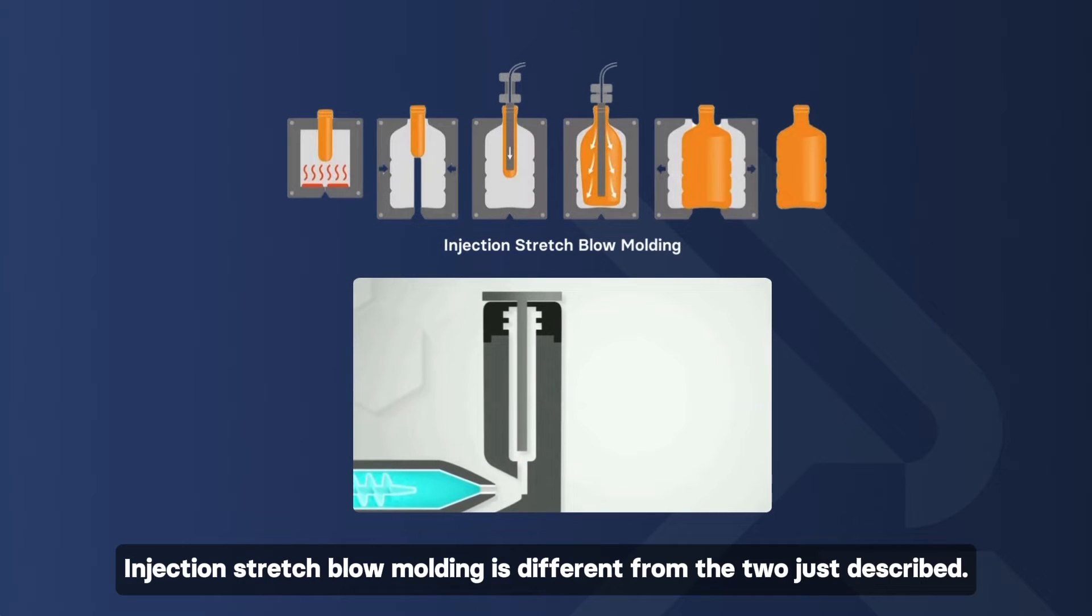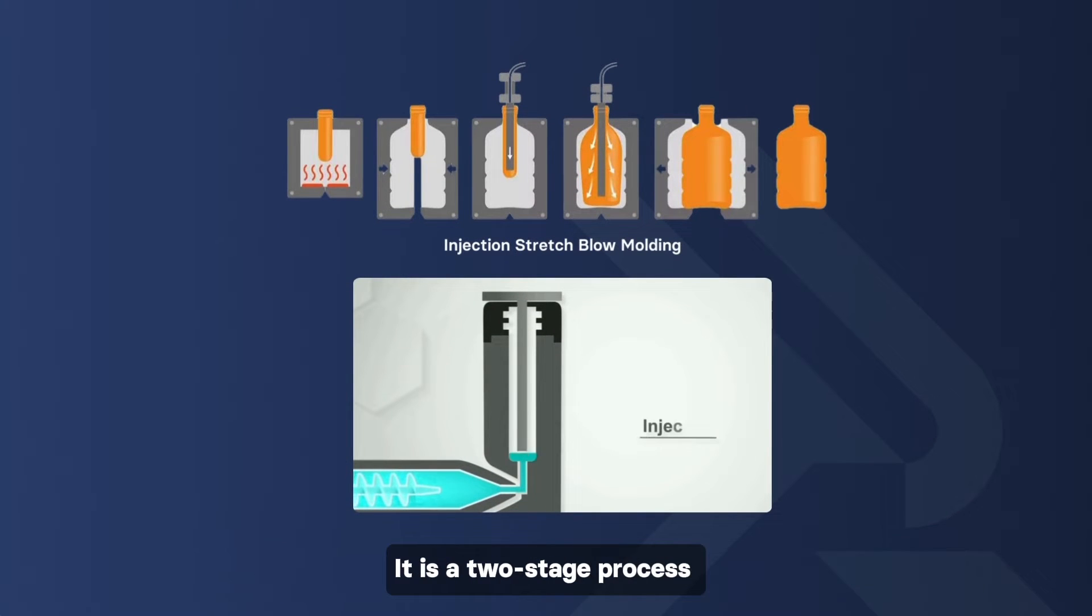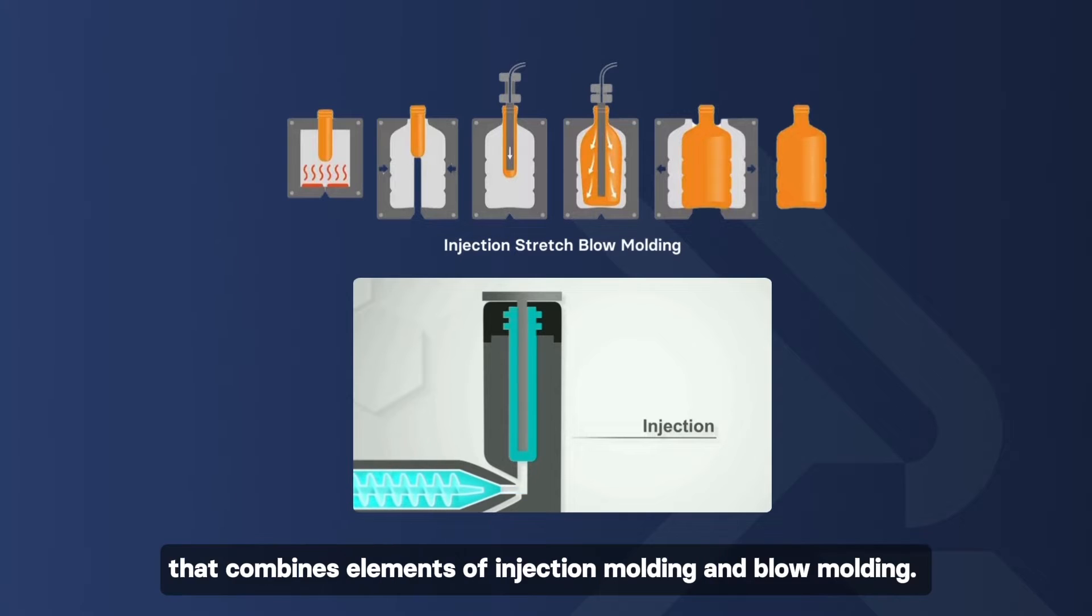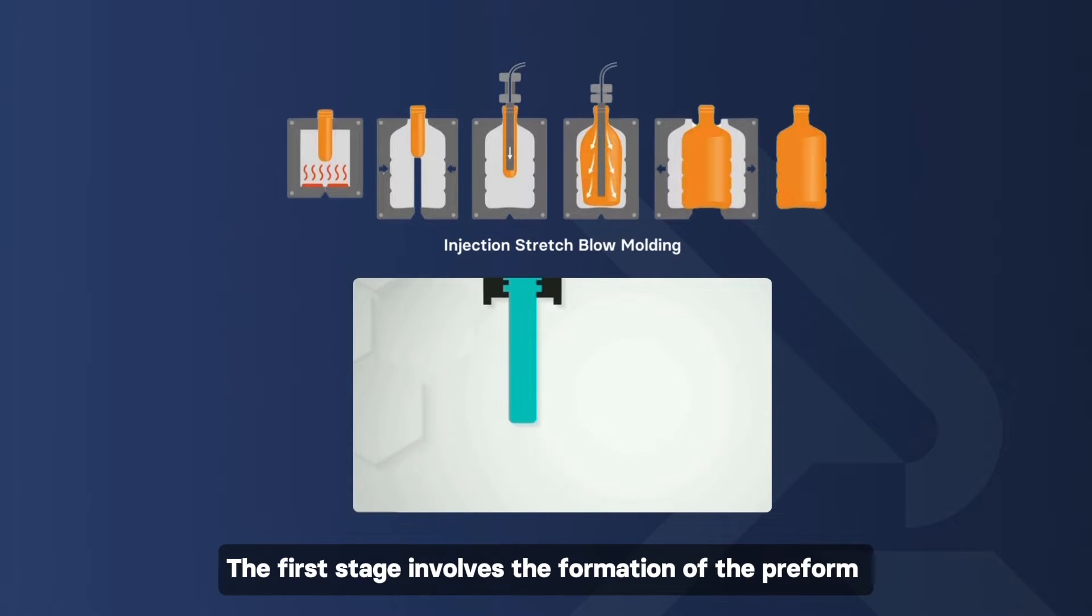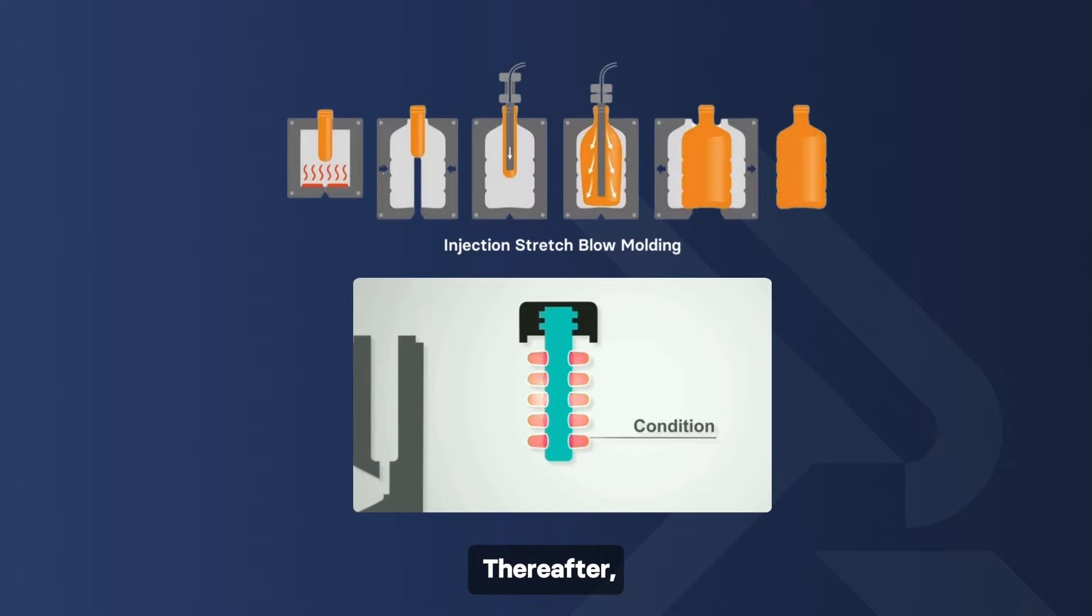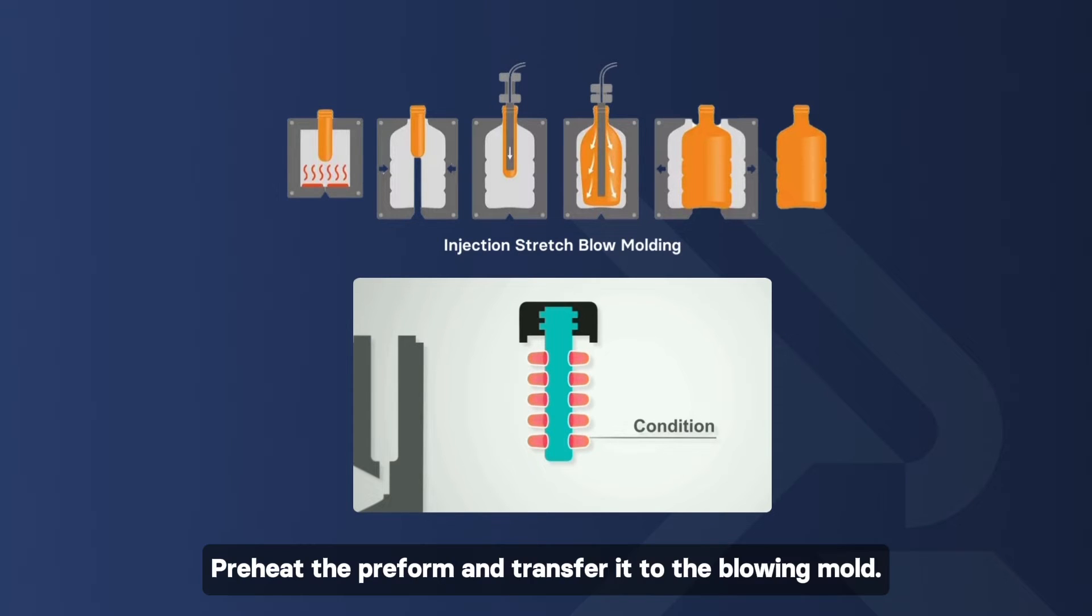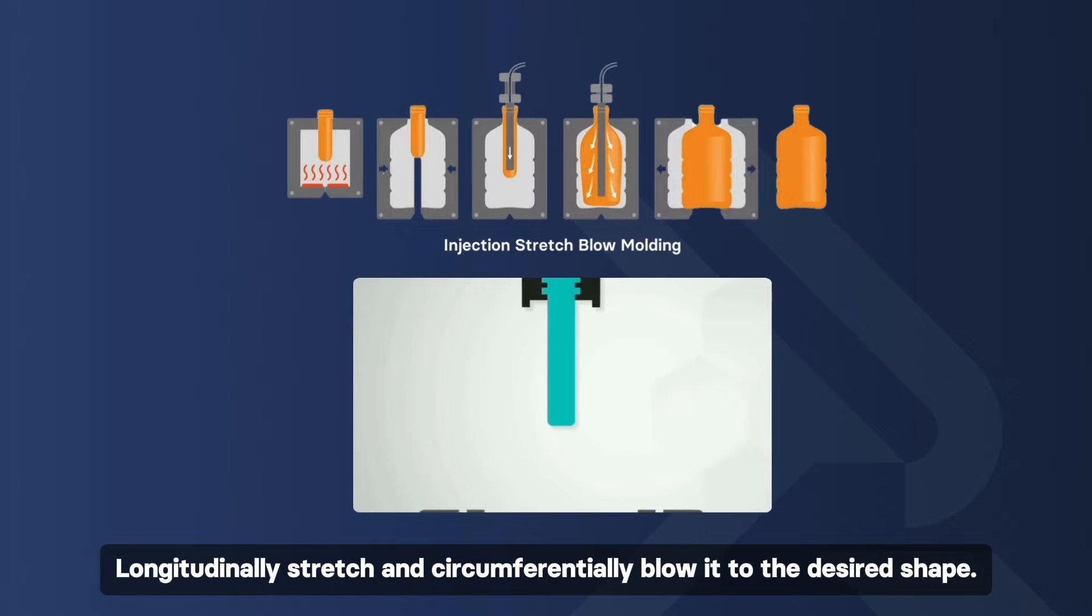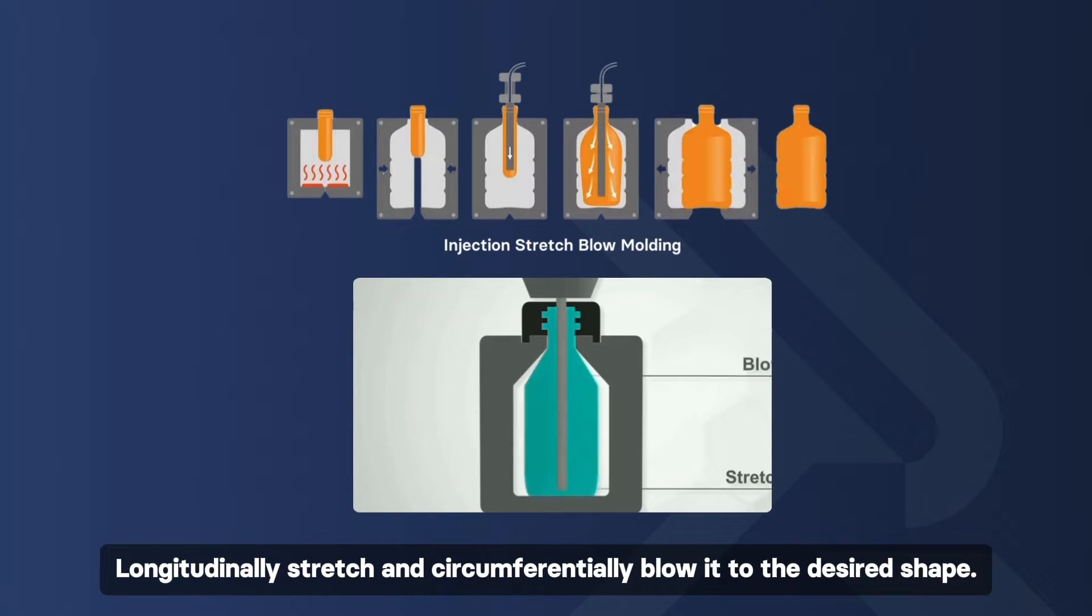Injection stretch blow molding is different from the two just described. It is a two-stage process that combines elements of injection molding and blow molding. The first stage involves the formation of the preform using the injection molding process. Thereafter, store the preform until you are ready to use it. Preheat the preform and transfer it to the blowing mold. Longitudinally stretch and circumferentially blow it to the desired shape.